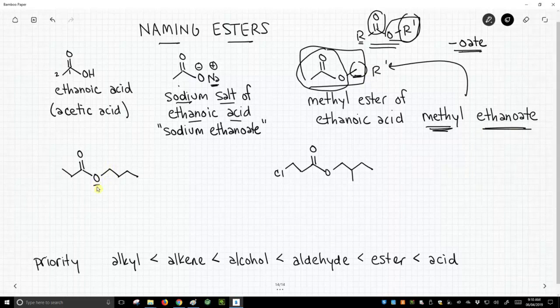So following that practice, here's our O prime group, and here's the R prime group. That's a butyl. So butyl will go out in front. This is the butyl ester of this, which is our carboxylic acid. It's a three-carbon acid. So it's not going to be propanoic acid, but propanoate.